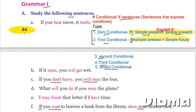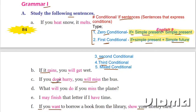First conditional: the structure is if + simple present + simple future. For example: 'If it rains, you will get wet.' We use the first conditional to talk about future situations. For example: 'If you don't hurry, you will miss the bus' — this is the condition, and 'you will miss the bus' is the future result. If you don't do this, this will happen.